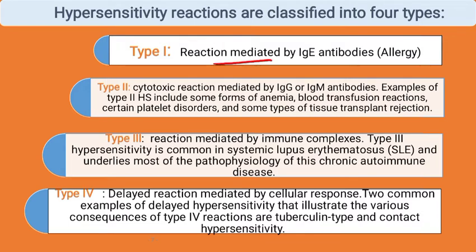There are four types of hypersensitivity classifications. Type 1 involves reactions mediated by IgE antibodies. Type 2 is cytotoxic reactions mediated by IgG or IgM antibodies; examples include certain types of anemia, blood transfusion reactions, certain platelet disorders, and some types of tissue transplant rejections. Type 3 involves reactions mediated by immune complexes.